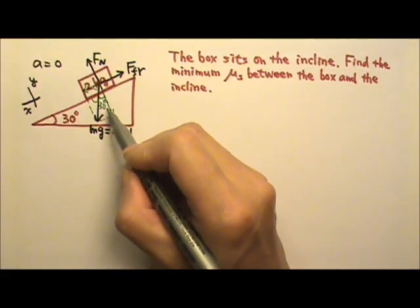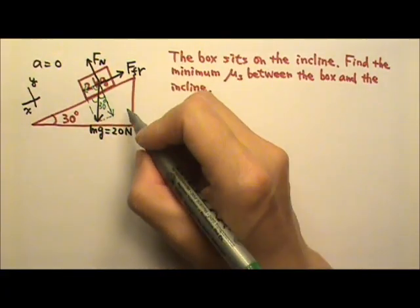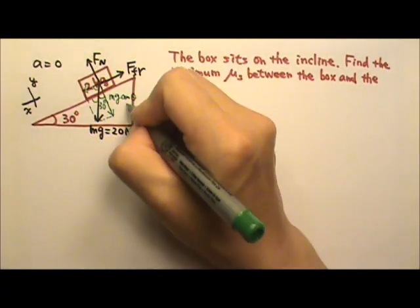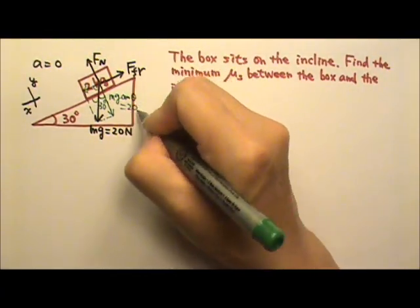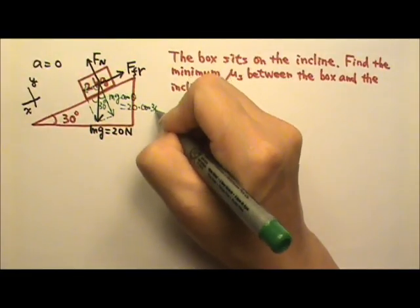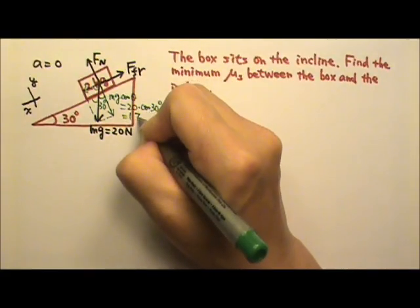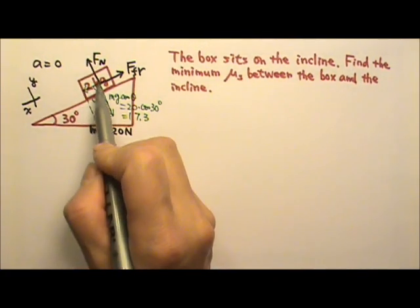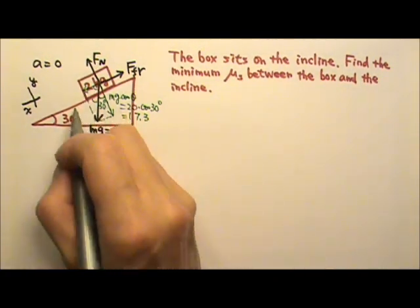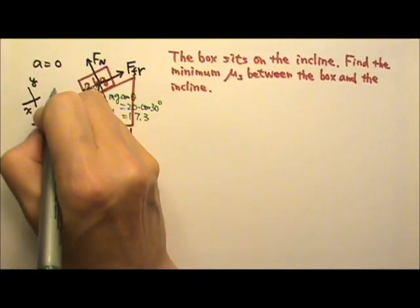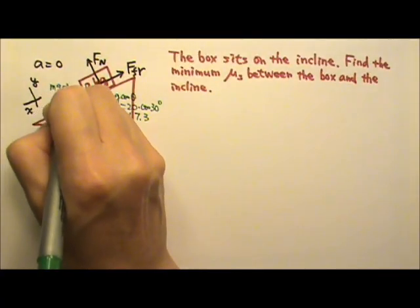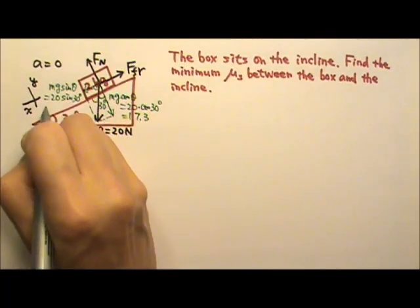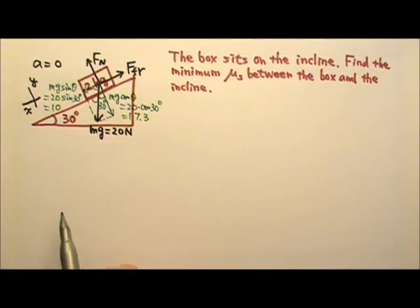The y-component is adjacent to the 30-degree angle, so this is Mg cosine theta. Mg cosine 30° = 20 cos 30° gives us 17.3 N. The other component must be the sine component, so this is Mg sine theta: 20 times sine 30° gives us 10 N.